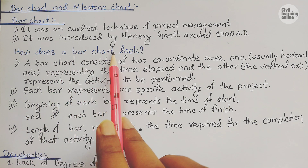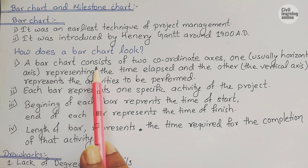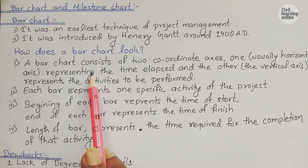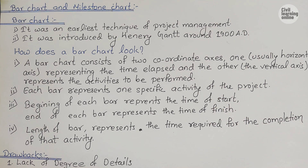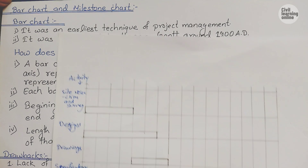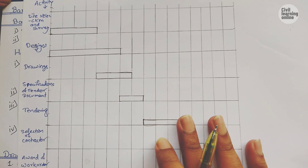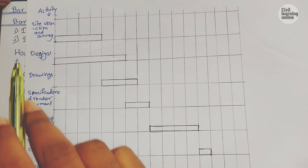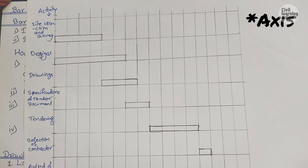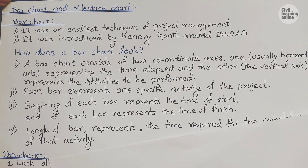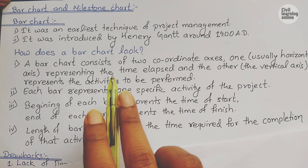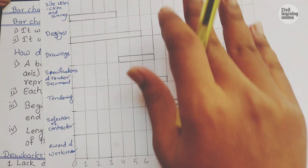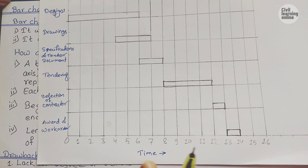How does a bar chart look? A bar chart consists of two coordinate axes: one representing the time lapse — the horizontal x-axis represents time lapse. Here I have drawn a sample bar chart where the vertical lines represent activities and the horizontal lines represent the time period required to complete each activity. The x-axis represents time lapse.